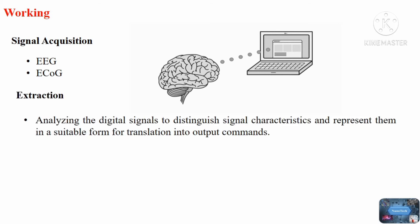Next is feature extraction, which analyzes the digital signals and translates into output commands. And then, resulting signal features are passed to the feature translation algorithm for the output device. Based on the commands, output device brain-computer interface provides functions. And also, the device operation then provides feedback to the user.